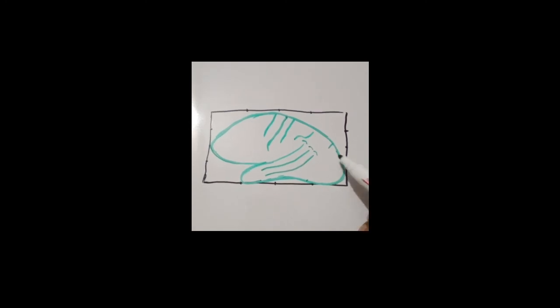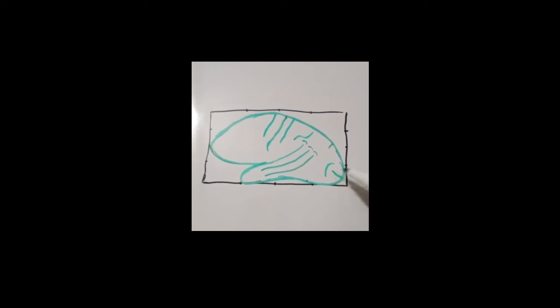Now come to the occipital lobe. Here there is a curved sulcus, the concavity of which faces towards the occipital pole — this is the lunate sulcus. Another sulcus cuts toward the occipital pole and comes towards the concavity — that is the calcarine sulcus. The calcarine sulcus is seen better on the medial surface.